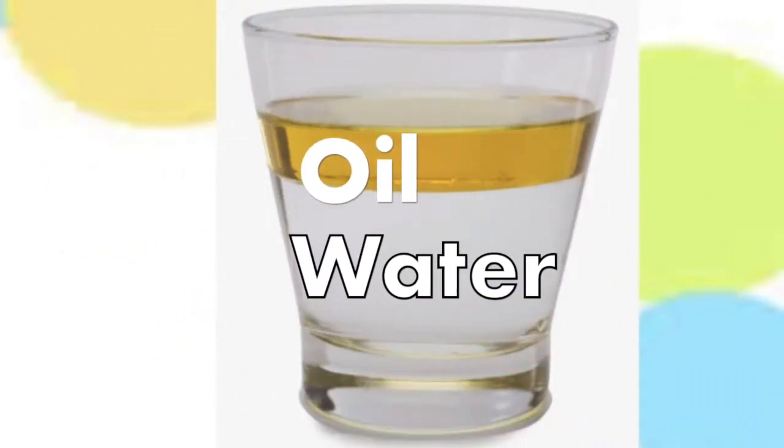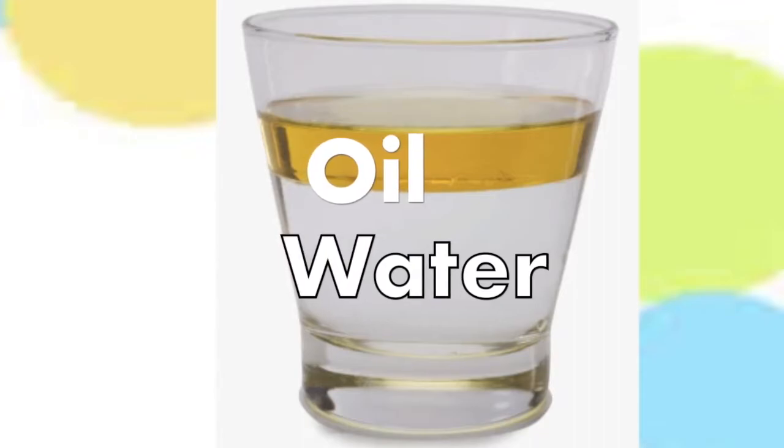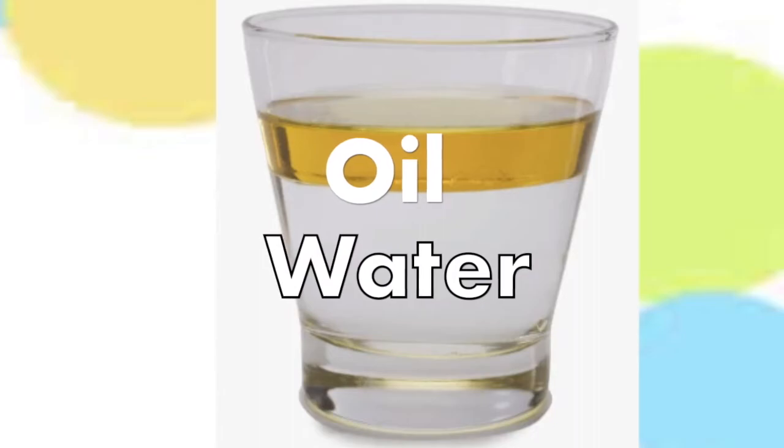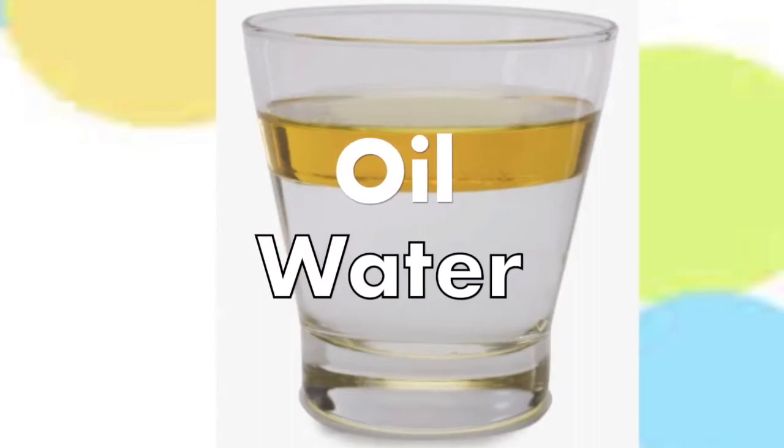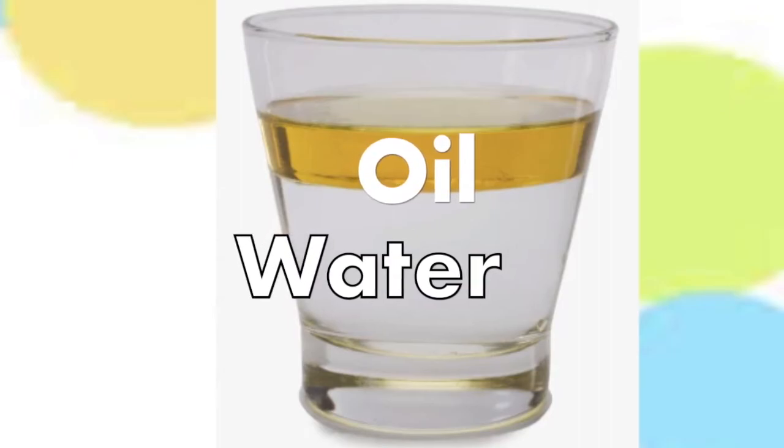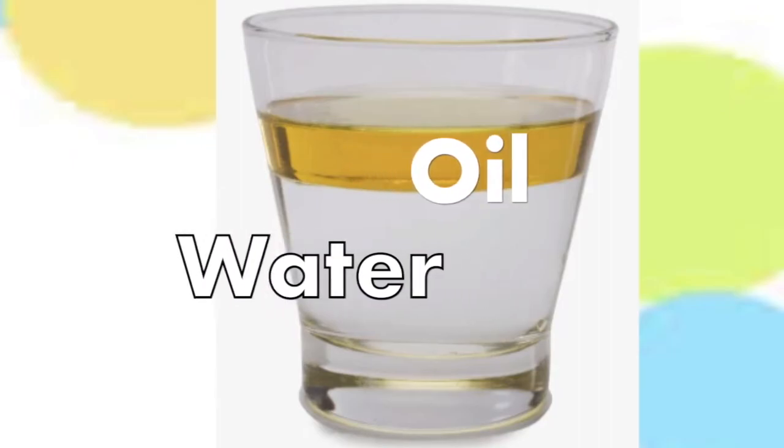Just like what we see in the picture, when an oil and water are combined, they do not mix evenly, but instead form two different and separate layers. Each of the layers is called a phase.